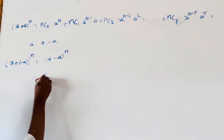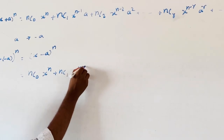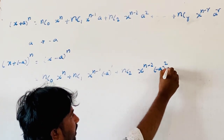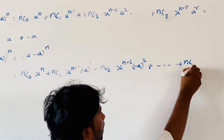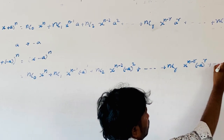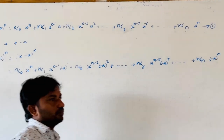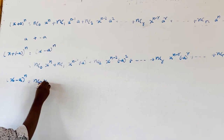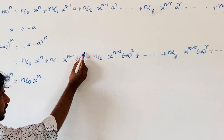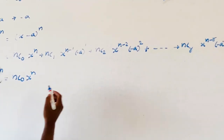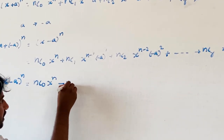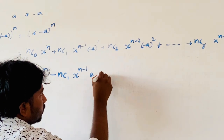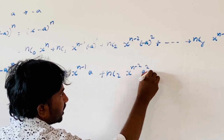That is equal to NC0·x^n plus NC1·x^(n-1)·(-a)^1, NC2·x^(n-2)·(-a)^2 and so on, NCR·x^(n-r)·(-a)^r. Now observe that when the power index r is odd, the term becomes negative, and when the index r is even, the term becomes positive. So minus NC1·x^(n-1)·a plus NC2·x^(n-2)·a^2 and so on.